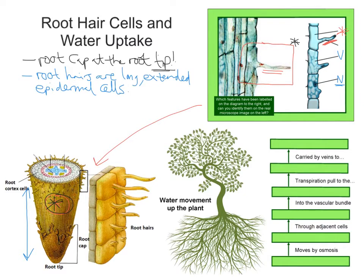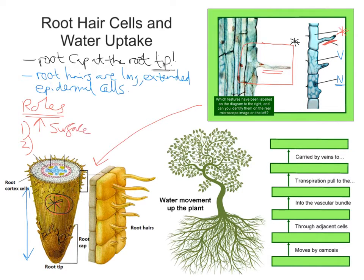Now, thinking about the role that these root hair cells have: the root hair cells increase the external surface area for absorption of water by osmosis, but also for mineral ions by active transport. They also help to provide anchorage for the plant. So there are two key roles: first, to increase the external surface area of the root for absorption of water by osmosis and mineral ions by active transport; second, to provide anchorage for the whole plant. A deep, dense network of root hairs helps to hold the plant upright and steady.